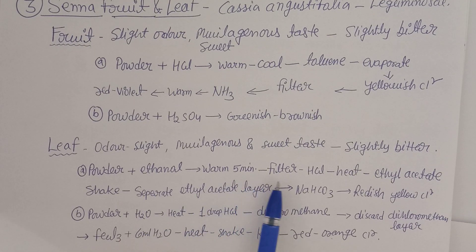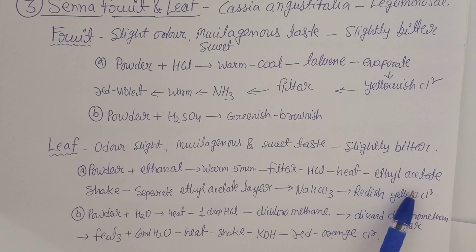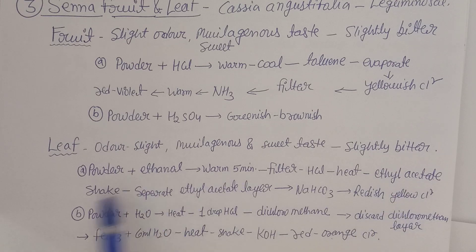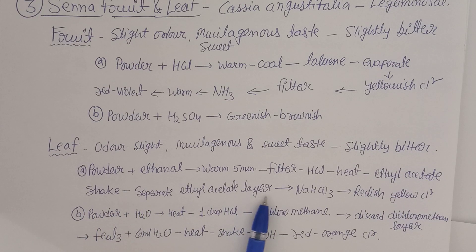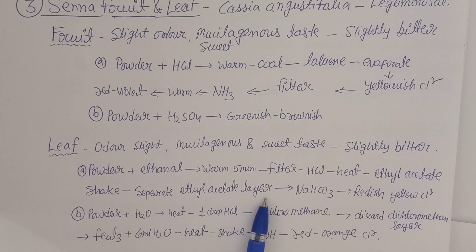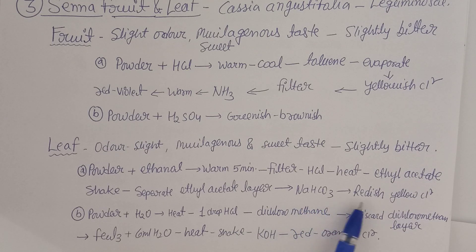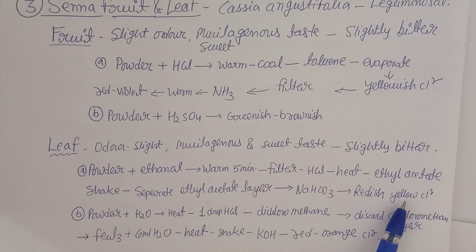To the filtrate, add HCl and heat again. Then add ethyl acetate and shake properly. The mixture will form two layers. Separate the ethyl acetate layer, then add sodium hydrogen carbonate — a reddish-yellow color will be observed, confirming the given sample is Senna leaf powder.